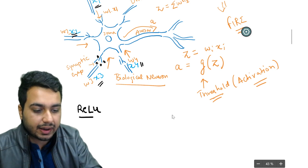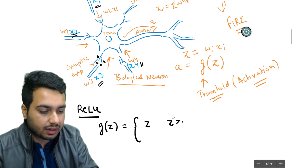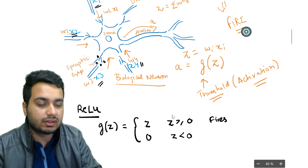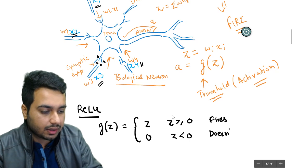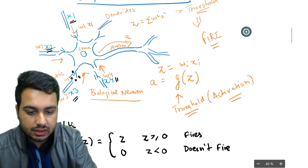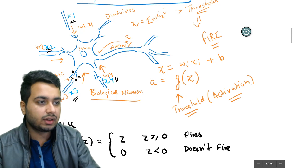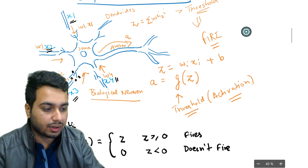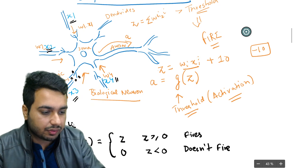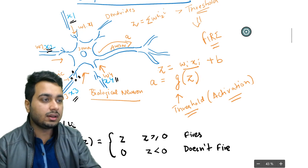These days we use a very interesting function called ReLU — Rectified Linear Unit. It is defined as: g(z) = z if z is greater than zero, and g(z) = 0 if z is less than zero. So the neuron fires when the activation is greater than zero, and does not fire when it is less than zero. We also add a bias term so that we can set a particular threshold — for example, if I want the neuron to fire when the value is minus 10, I keep the bias as plus 10.